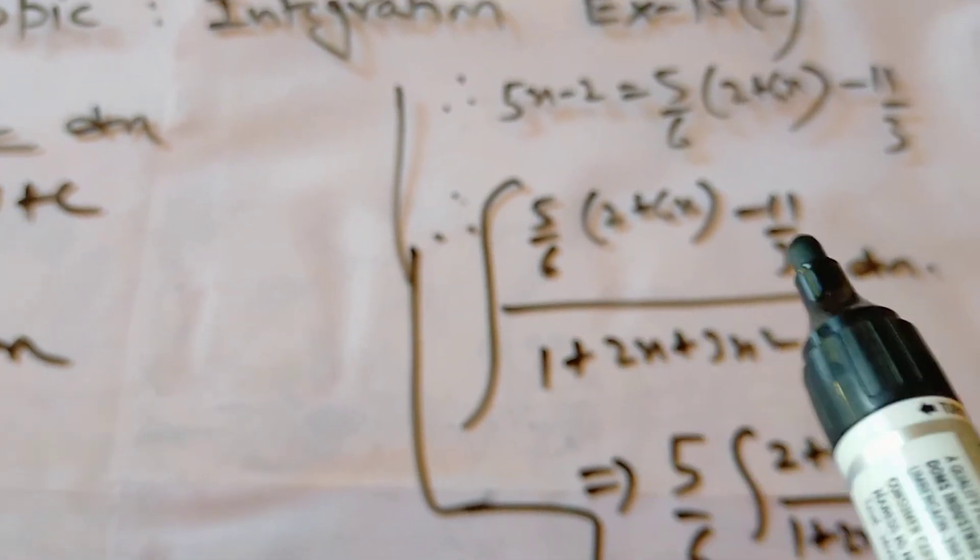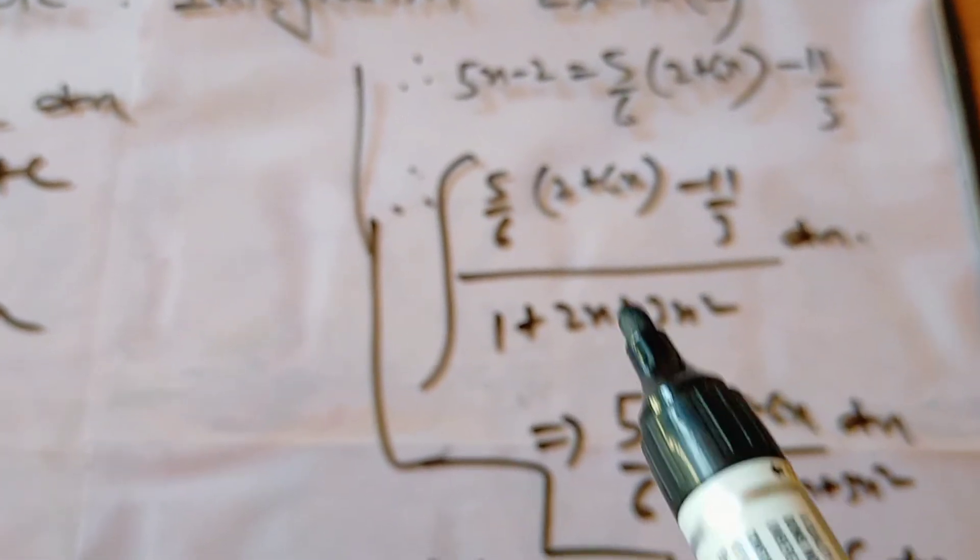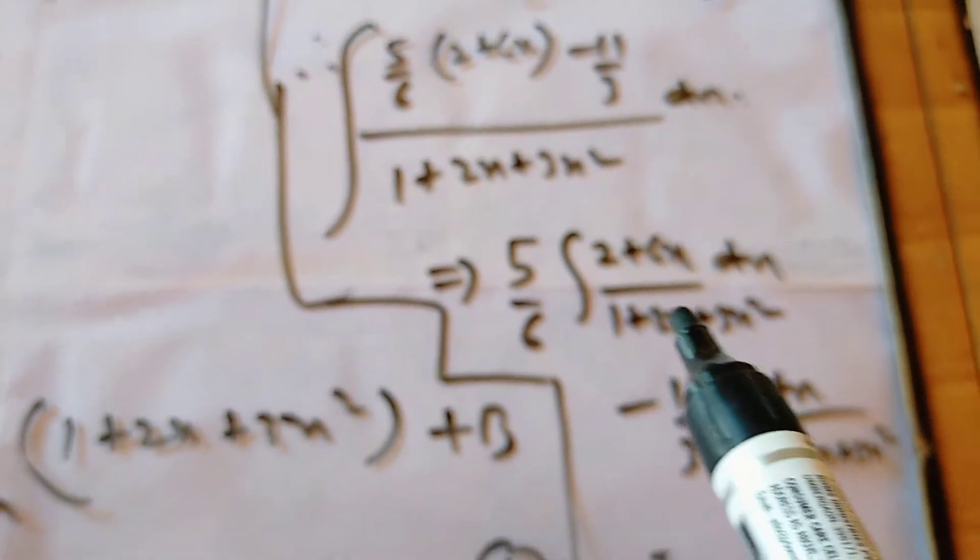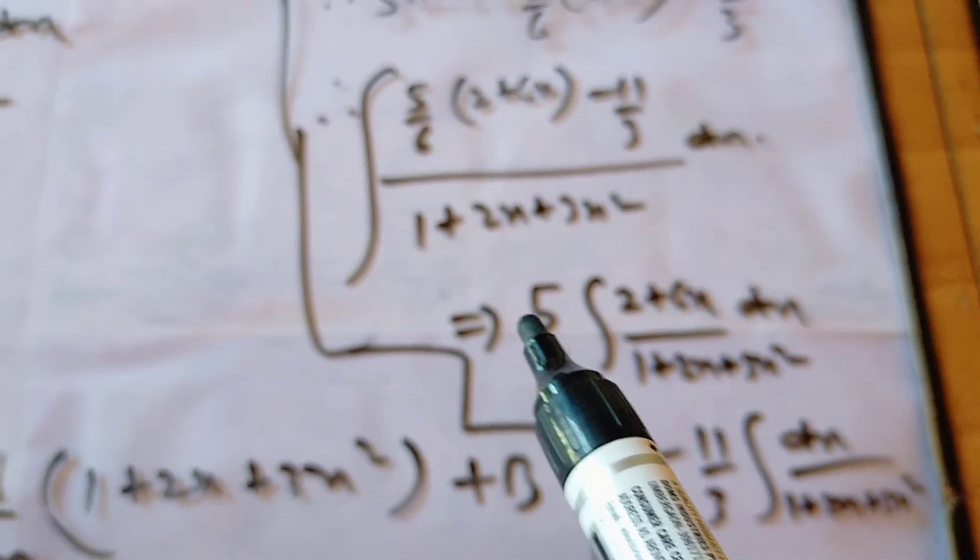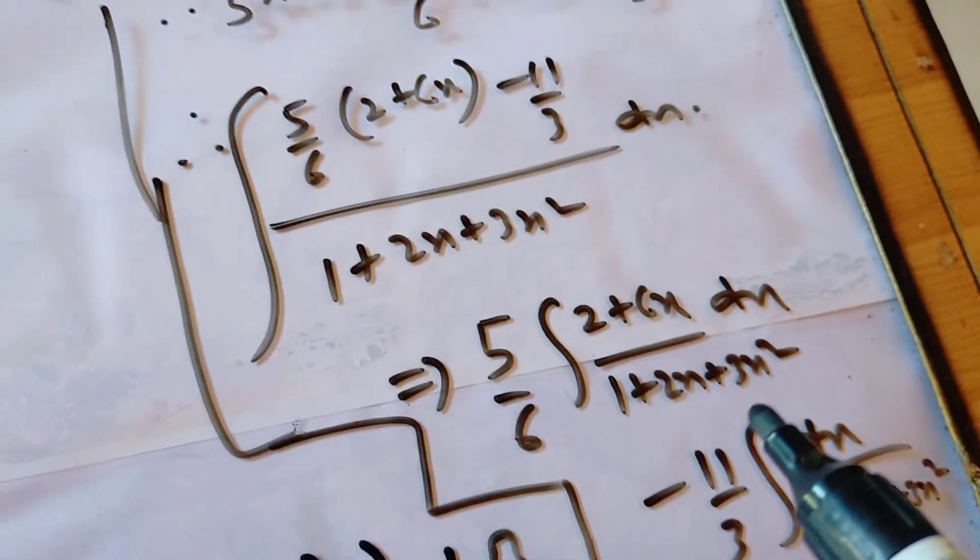Now it will simplify our question, and it will make two parts of our question. In the first part, it is I1, which is 5 by 6 into 2 plus 6x upon 1 plus 2x plus 3x square. dx.